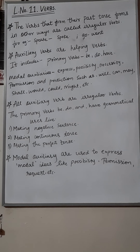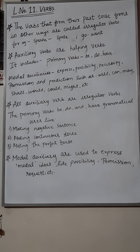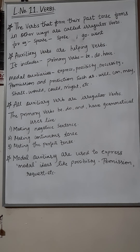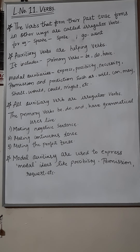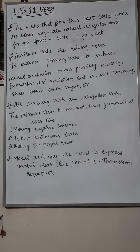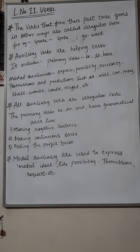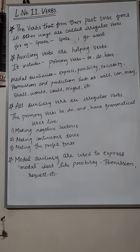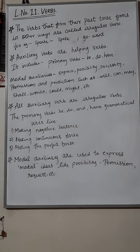Moving on to auxiliary verbs, which are also known as helping verbs. These include primary verbs like be, do, and have. Modal auxiliaries express possibility, necessity, permission, and predictions — such as will, can, may, shall, would, could, might, etc. All auxiliary verbs are irregular verbs. The primary verbs be, do, and have have important grammatical uses in our language.